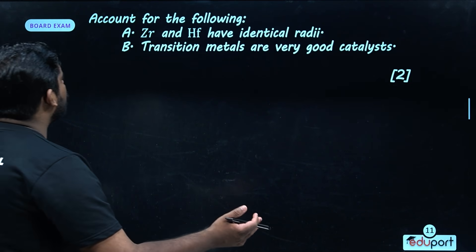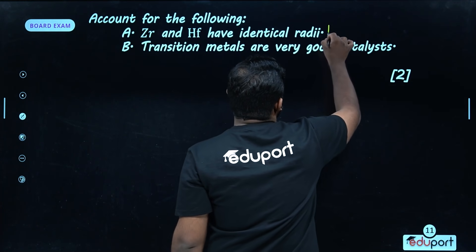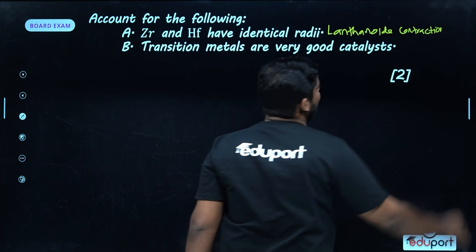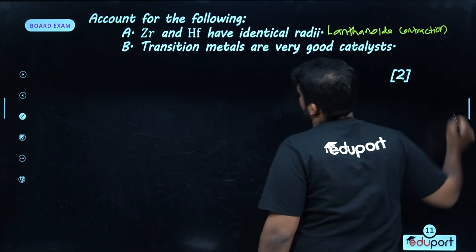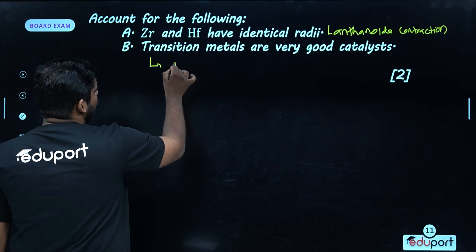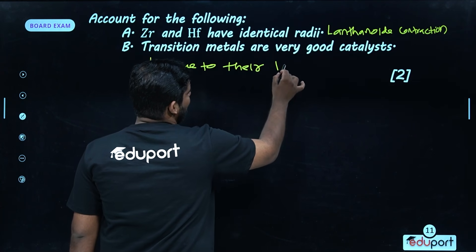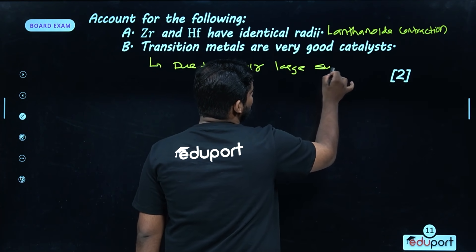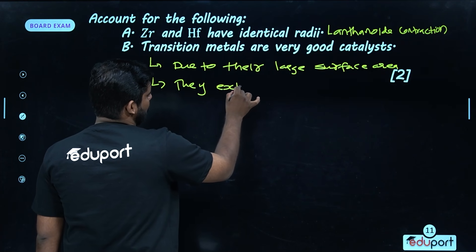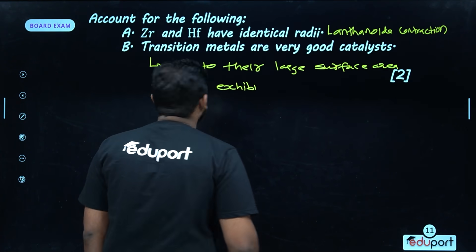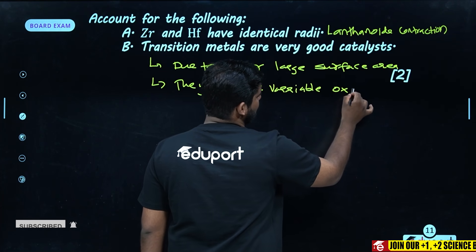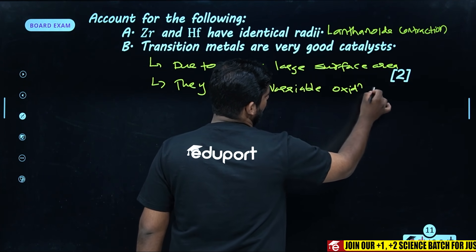Next question: account for the fact that zirconium and hafnium have identical radii. This is due to lanthanoid contraction. Transition metals are very good catalysts — this is very simple — due to their large surface area and because they exhibit variable oxidation states. These two factors make transition metals good catalysts.